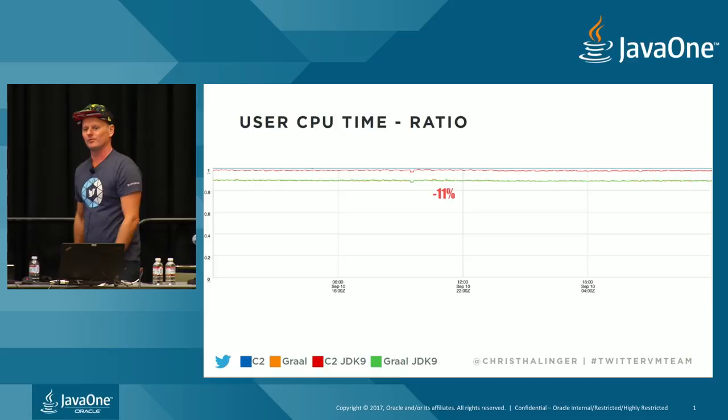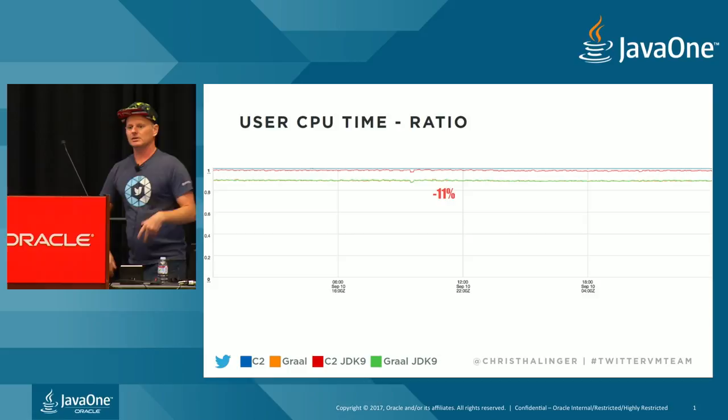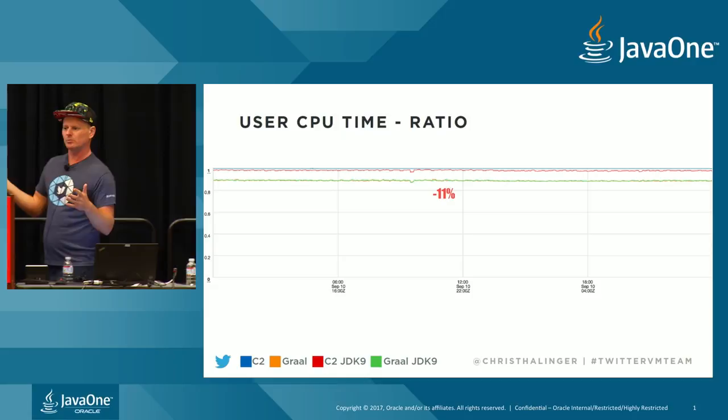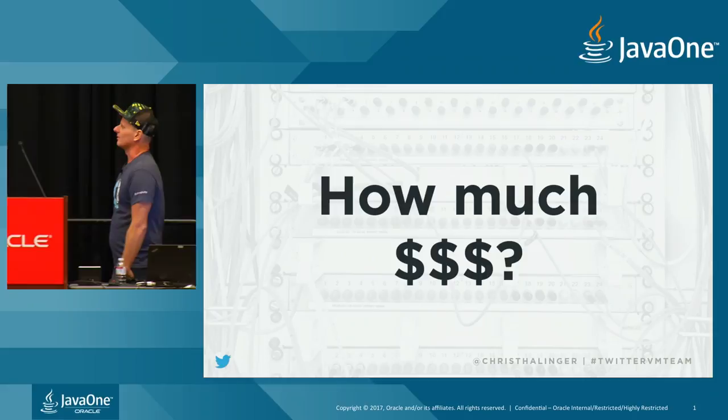11% is huge. If you've ever worked on a compiler and tried to make something faster, you crawl around in the 1% range and are super happy if it's 2%. 11 is ridiculous. I never expected that. When I joined Twitter, I pitched this idea — I said look, there's this compiler, it's an Oracle Labs research project, no one has ever used it in production before, but I think it would help us. I'm super stoked that it worked out.